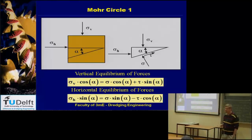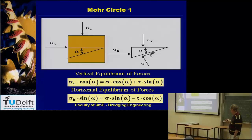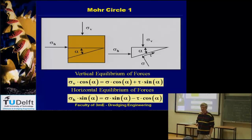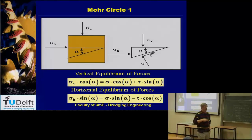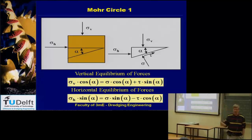If we want to know the stresses on any plane under an angle alpha, we have to do some calculations. We have vertical, horizontal, and a plane under angle alpha. An equilibrium of stresses does not exist — you can never take the equilibrium of stresses, only the equilibrium of forces. So you transform those stresses into forces. We make a triangle with the vertical and horizontal stress, and on the plane under angle alpha we have a sigma and a tau.